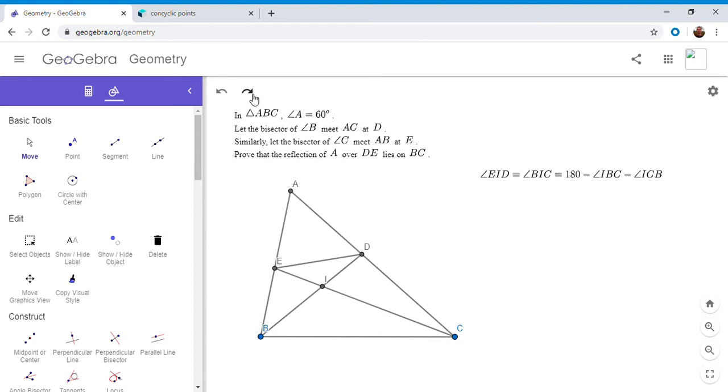Half angle B plus half angle C add up to 60. So 180 minus IBC minus ICB is 180 minus half B minus half C, because BD and CE are angle bisectors. Finally we get that angle EID has to be 120 degrees. So angle EID is 120 and angle A is 60, so these two angles add up to 180, which means AEID is cyclic.